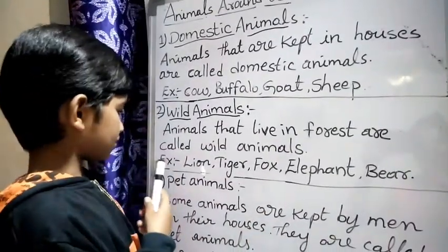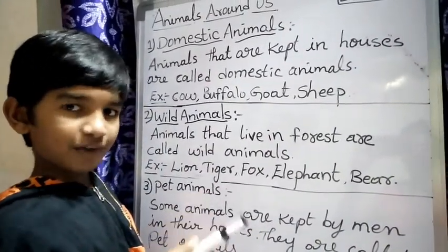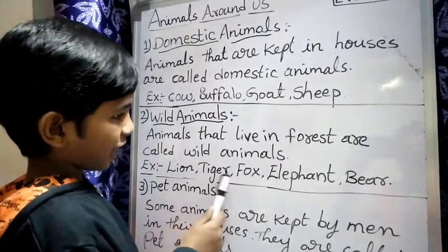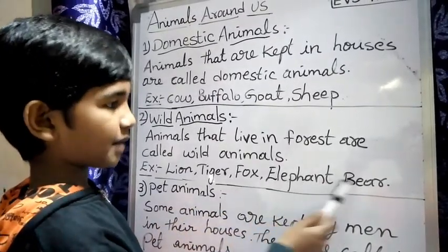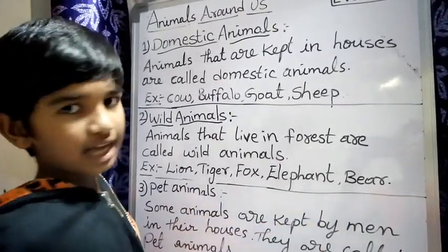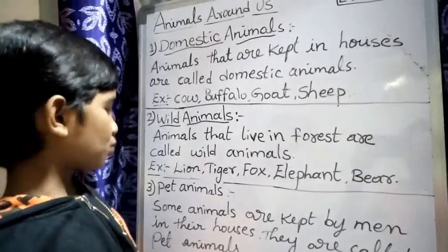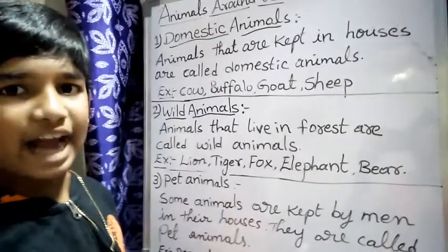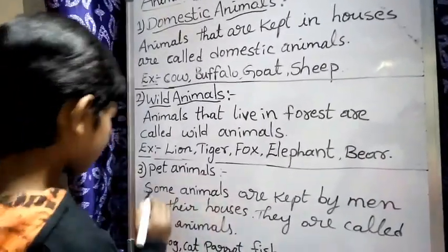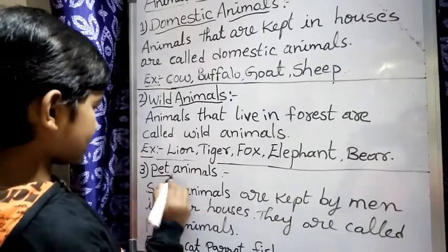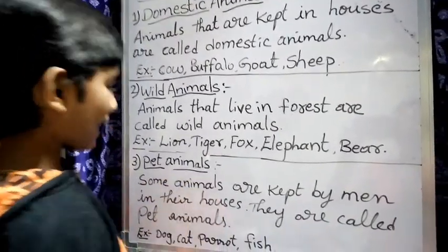Examples of wild animals: lion, tiger, fox, elephant, bear. These are the wild animals. Third one is pet animals.